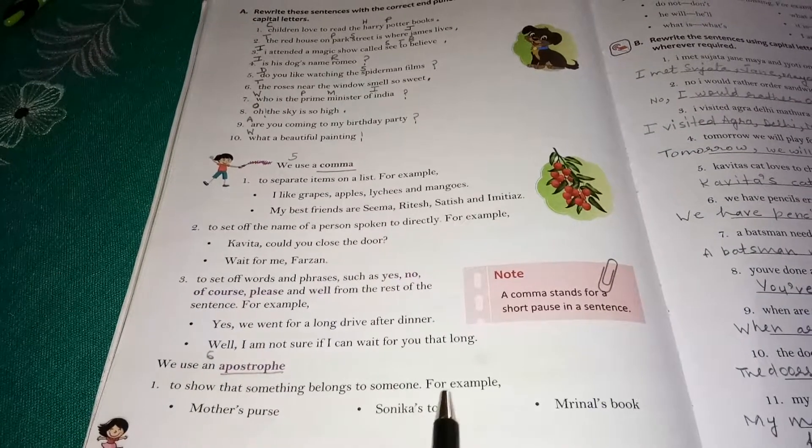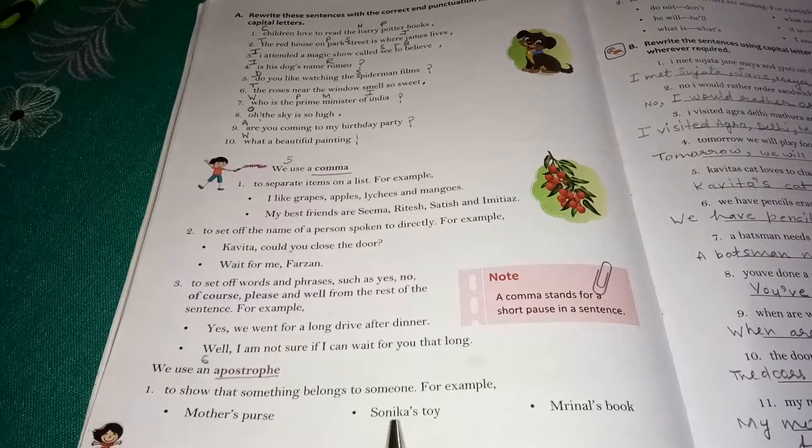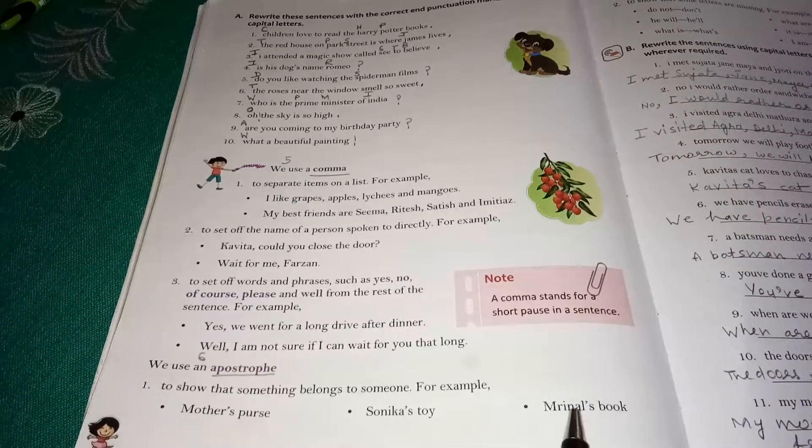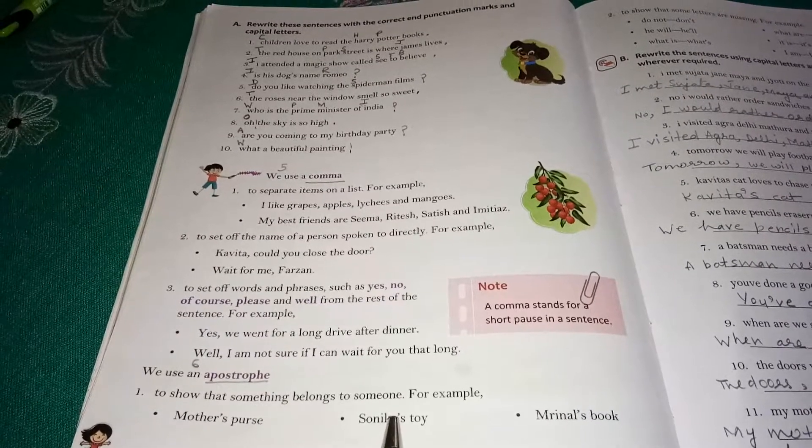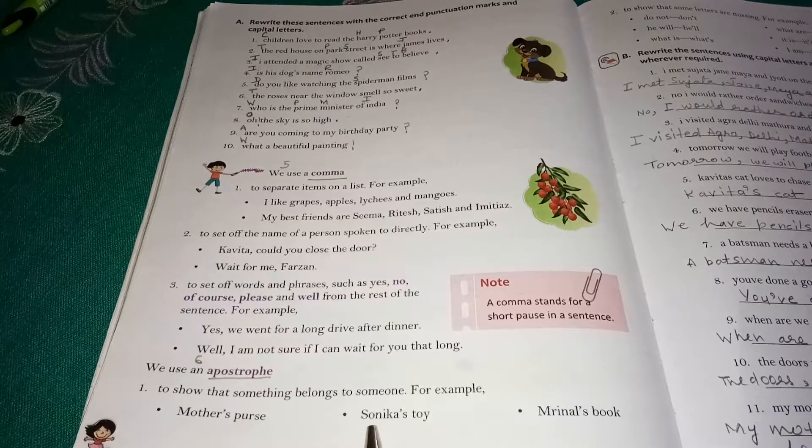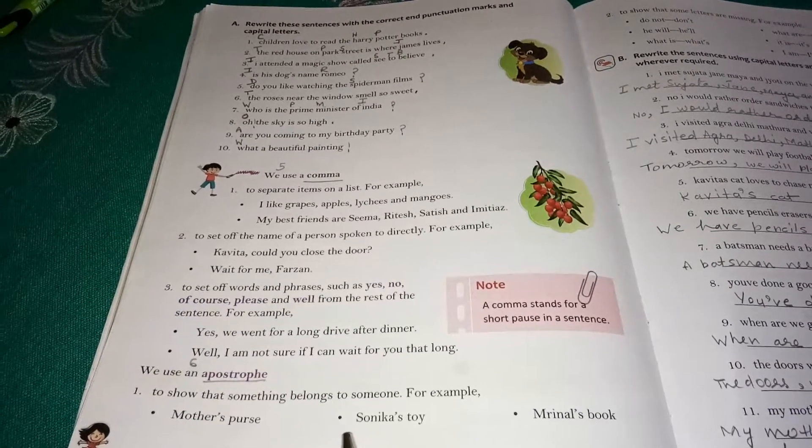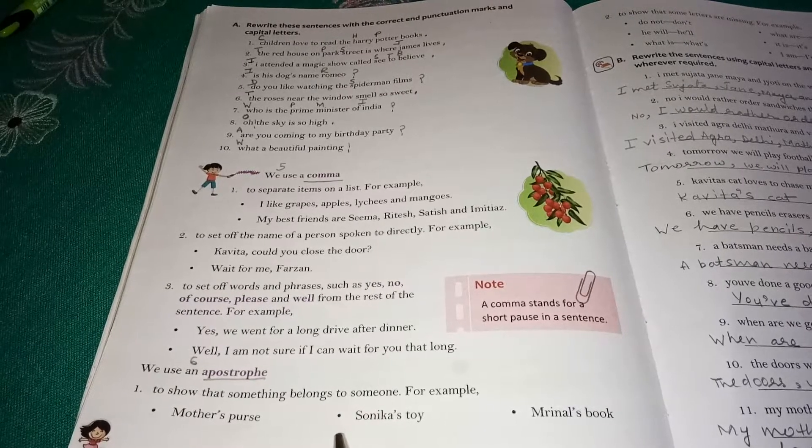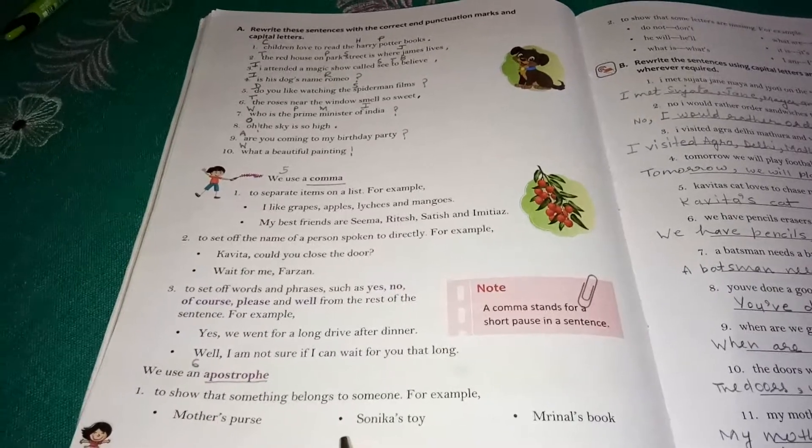For example, mother's purse, Shonika's toy, Renal's book. Children, in your literature reader book, we have just done lesson The Farmer and the Apple Tree. In that lesson also you have read bees' hives. If bees word is plural, that is why apostrophe has come after s.